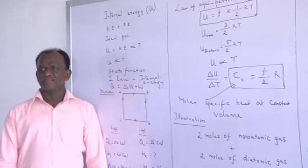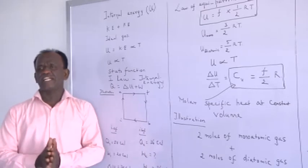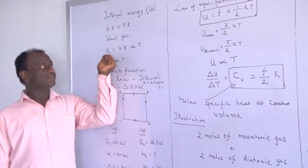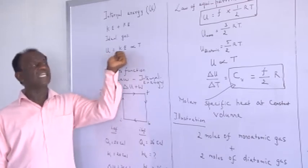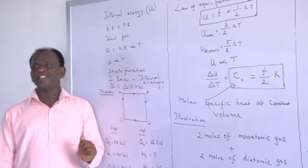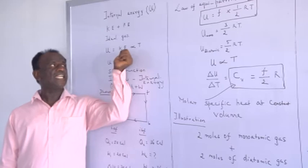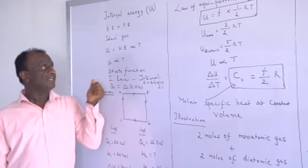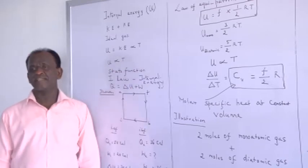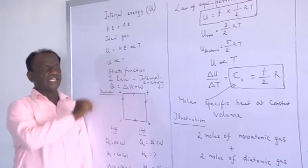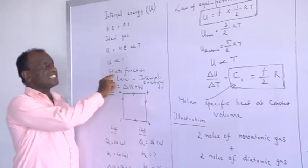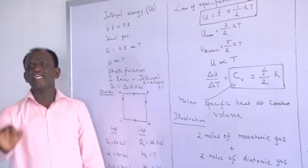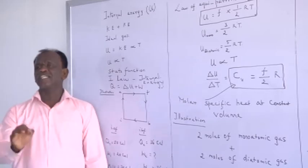In the case of an ideal gas, we assume that the intermolecular attraction is negligible. Therefore, an ideal gas possesses internal energy contributed only from the kinetic energy of its molecules. As per the kinetic theory of gases, the kinetic energy of a molecule depends upon temperature. Therefore, internal energy U is proportional to temperature — internal energy is a function of temperature. Moreover, internal energy is a state function: if a function depends only upon the initial and final points of travel, then it is a state function, as opposed to a path function which depends on the path.